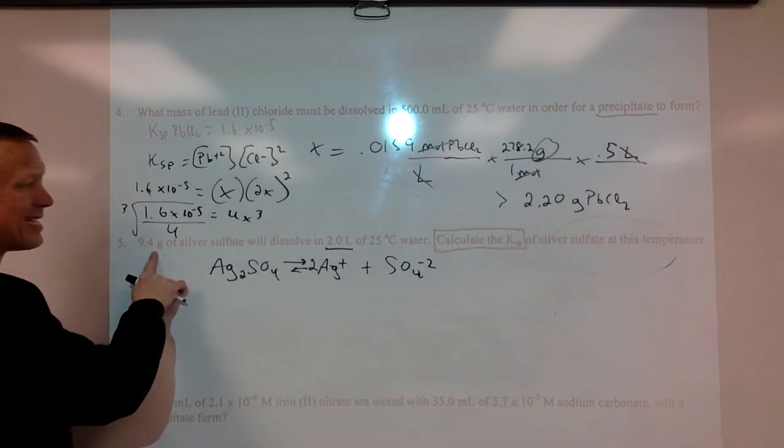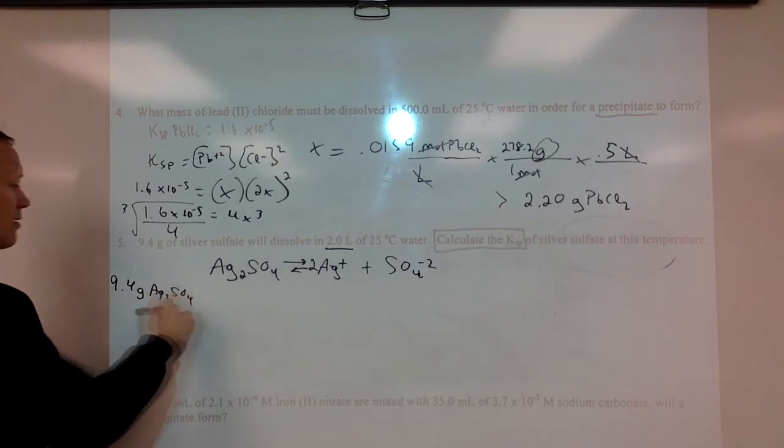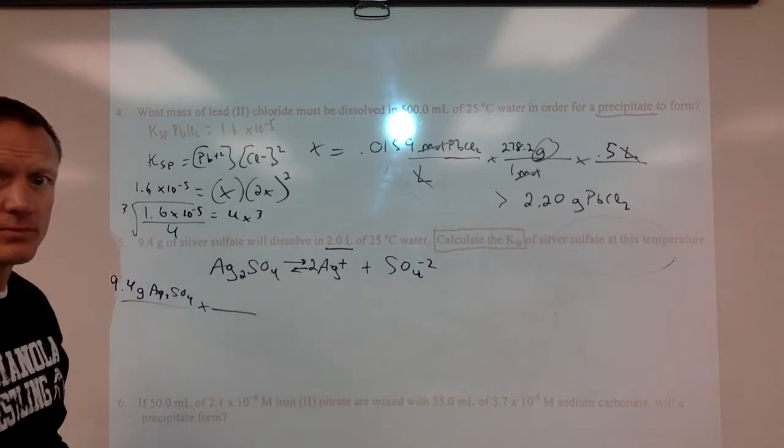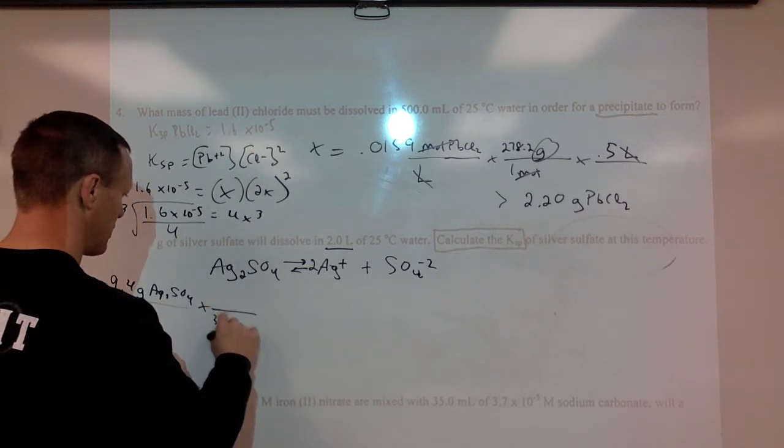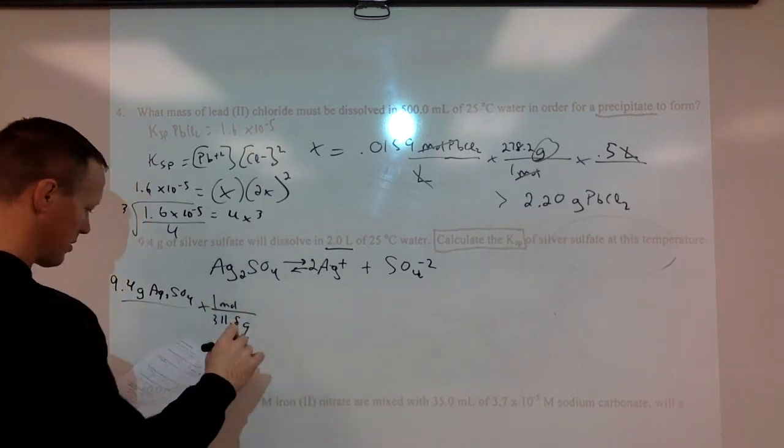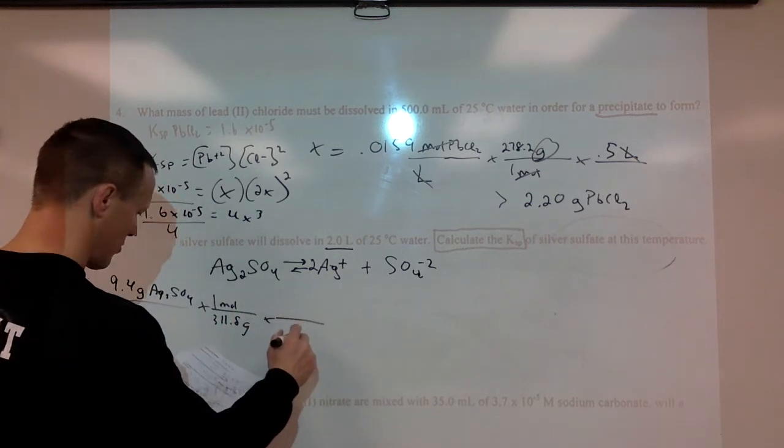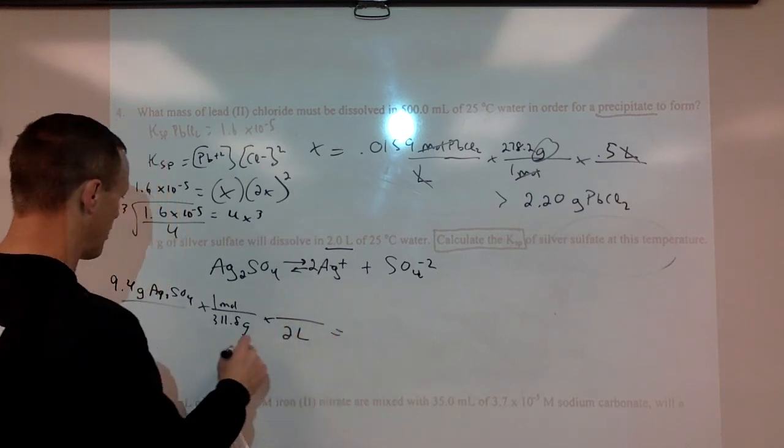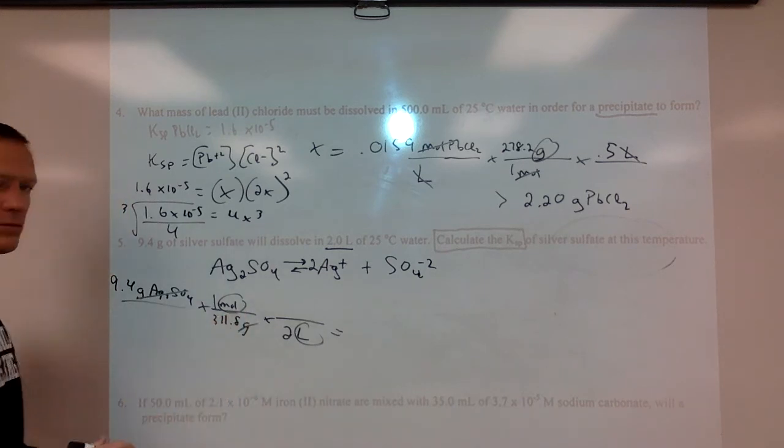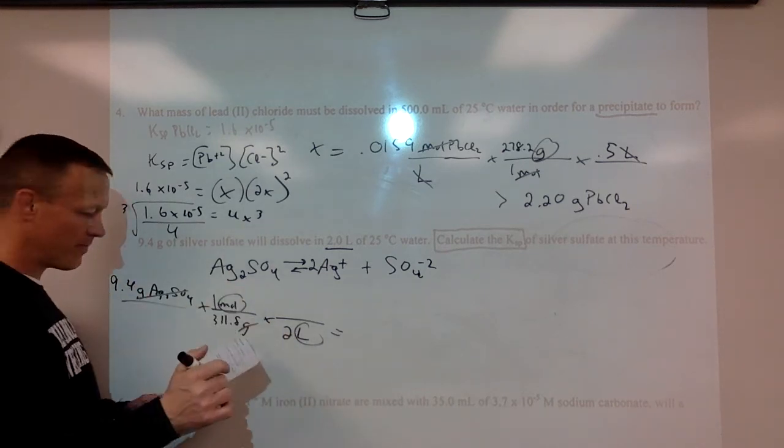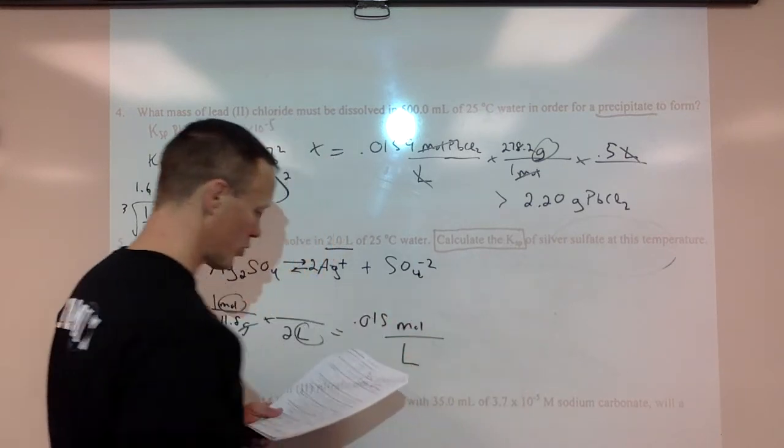First thing we need to do is figure out what is the molarity. So we have 9.4 grams of silver sulfate, and the grams per mole is 311.9, and we have two liters of solution. So that's going to give us moles over liters. Right here we get our moles and divide by liters to get molarity. That'll give us 0.015 moles per liter.